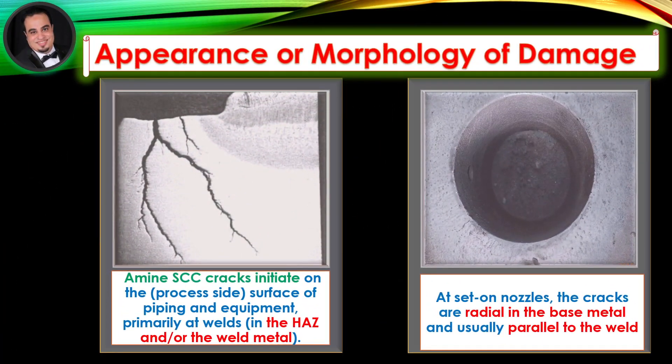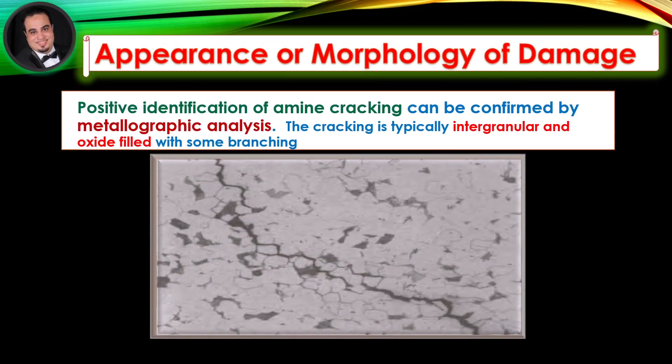Appearance or morphology of damage: Amine stress corrosion cracking cracks initiate on the process side surface of piping and equipment, primarily at welds in the heat affected zone and/or the weld metal. At set-on nozzles, the cracks are radial in the base metal and usually parallel to the weld. Positive identification of amine cracking can be confirmed by metallographic analysis. The cracking is typically intergranular and oxide filled with some branching.